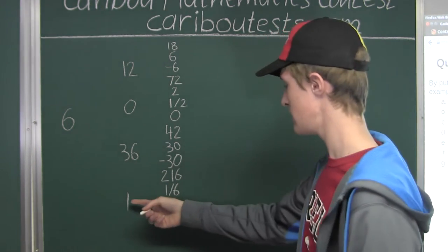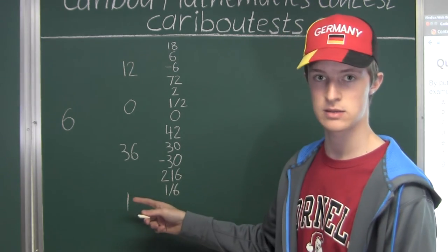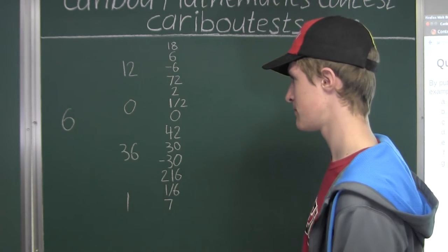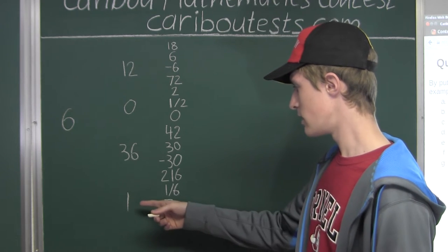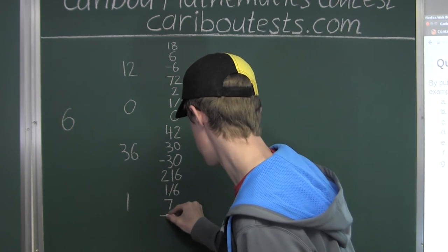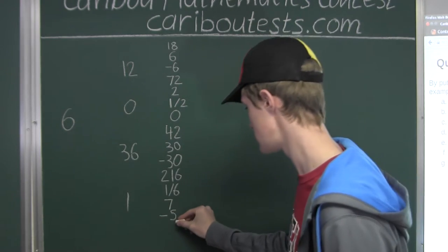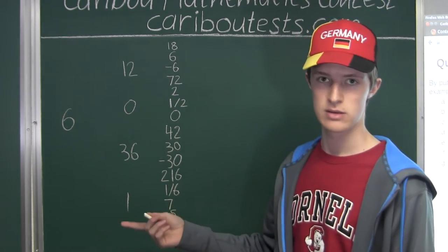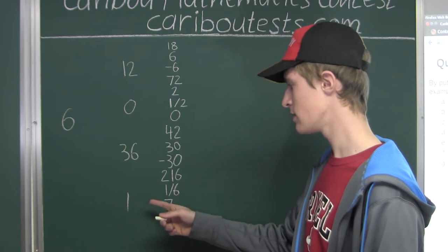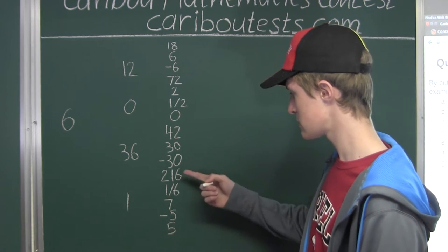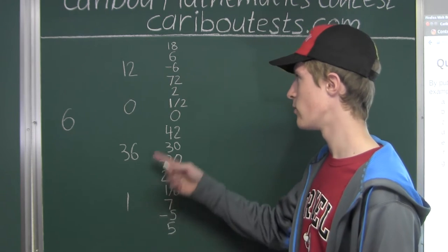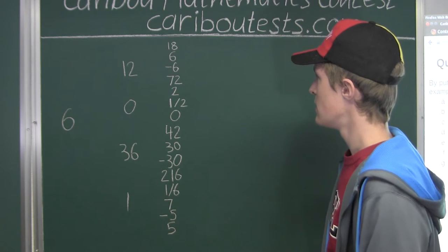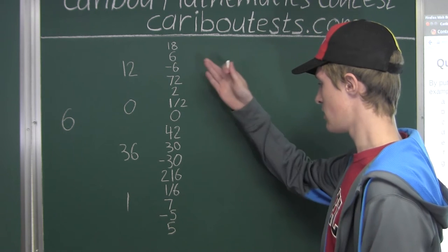Finally, from 1: 1 + 6 = 7, 1 − 6 = −5, 6 − 1 = 5, 1 × 6 = 6 (already have that), 1 ÷ 6 = 1/6 (already have that), and 6 ÷ 1 = 6 (already have that). So these are all the numbers that can be generated from three sixes.